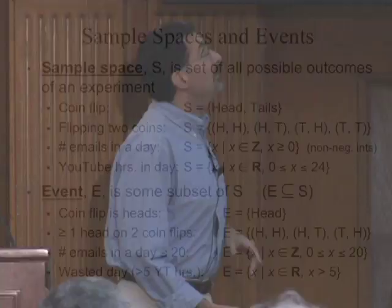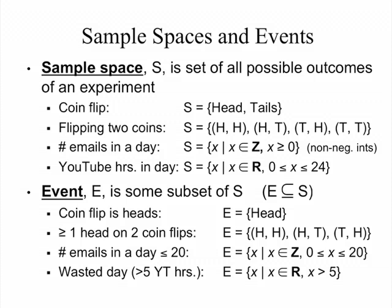When we think about sample spaces and want to define a probability, we think of an event. An event is just some subset of the sample space. An event could be: we flip a coin, and the event we care about is the coin coming up heads. We can ask what's the event space of getting more than one head on two coin flips — that's all the cases where we get at least one head. Getting less than 20 emails in a day — that's what I like to refer to as a good day; this has not happened since about 1992.